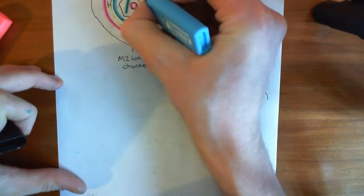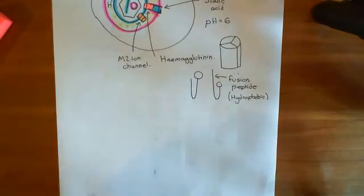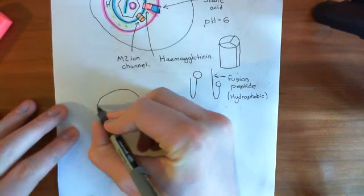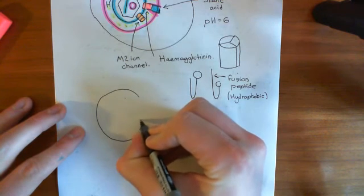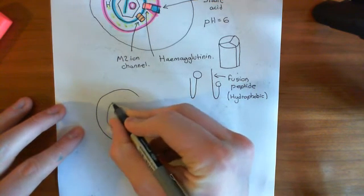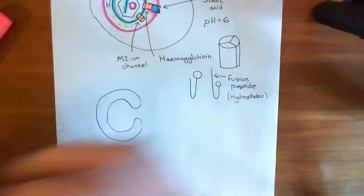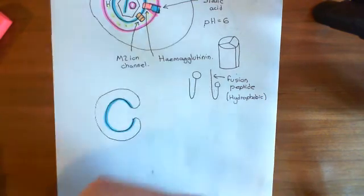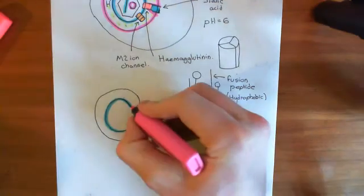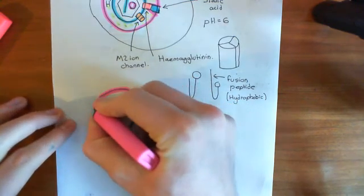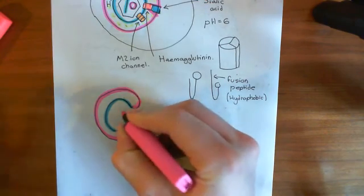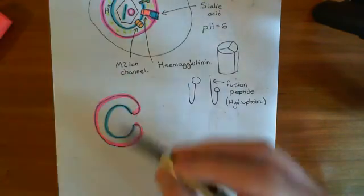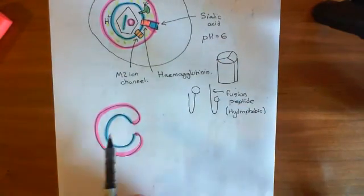The viral envelope and the endosome membrane are going to fuse, becoming continuous with one another - they are now effectively one and the same thing. That is going to release the contents of the virion particle. But you might say the whole nucleocapsid is now just going to float out - wrong. Something else is going to happen before this fusion event occurs.